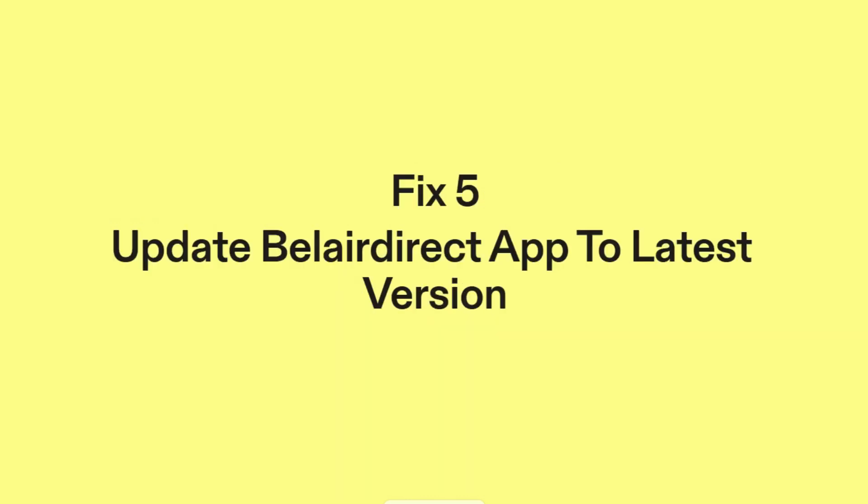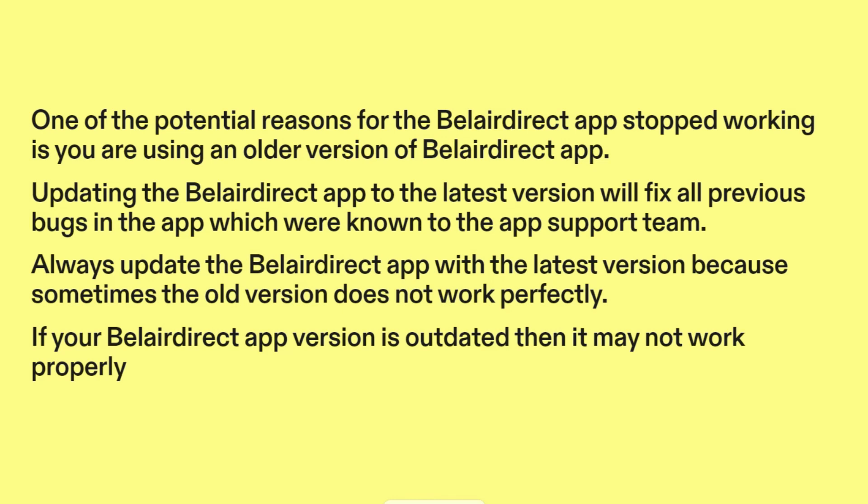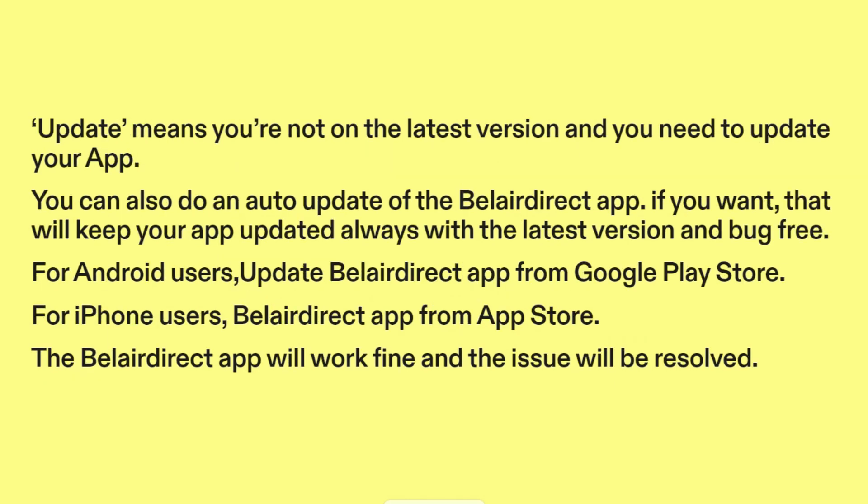Fix five: Update the Belair Direct app to the latest version. One of the potential reasons the Belair Direct app stopped working is that you are using an older version. Updating to the latest version will fix all previous known bugs. Always update the app because sometimes the old version does not work perfectly. If your version is outdated, it may not work properly. You can also enable auto-update to keep your app always updated and bug-free.